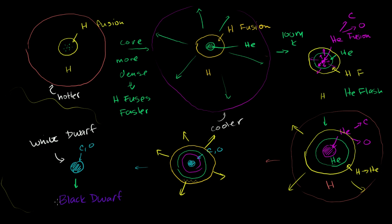Black dwarfs are obviously very hard to observe because they're not emitting light, and they don't have quite the mass of something like a black hole. That's what's going to happen to the sun. In the next few videos, we're going to talk about what would happen to things less massive than the sun and things more massive than the sun. For more massive stars, there would be so much pressure on the carbon-oxygen core that it would begin to fuse into heavier and heavier elements, all the way up to iron.